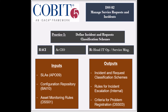The practice receives several inputs that include the service level agreements from the AP09 process, the configuration repository from the BAI10 process, and the asset monitoring rules from the DSS-1 process. It generates three outputs which are the criteria for problem registration to be used by the DSS-3 process, the incident and service request classification schemes, and the rules for incident escalation, both to be used internally.